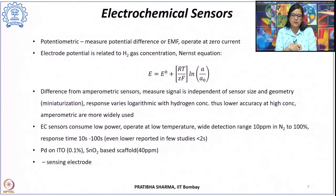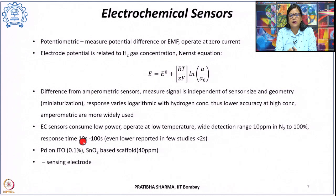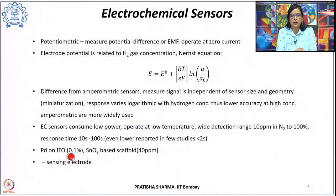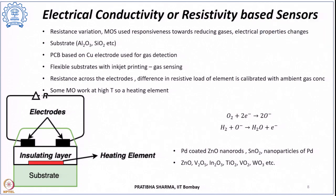The advantages of electrochemical sensors are lower power consumption, operation at lower temperature, and wide detection range from around 10 ppm in nitrogen to 100%. Response time is typically 10 to 100 seconds, though some reports show as low as 2 seconds. Materials like palladium on ITO give a limit of detection of 0.1%, while tin oxide-based scaffolds can operate at higher temperatures with a detection limit of 40 ppm.